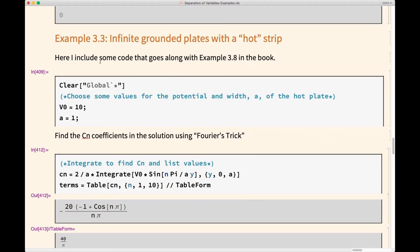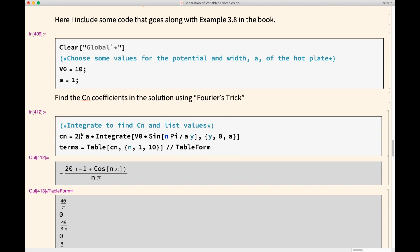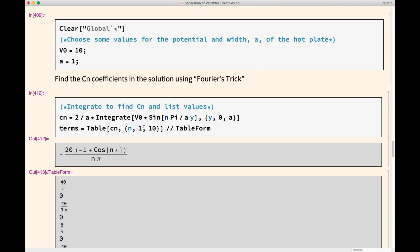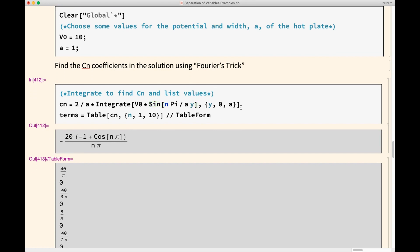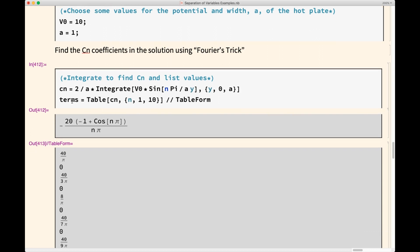I wrote up a little notebook to look at this problem in particular. This particular problem, I just wrote a little bit of code to go with it. I've defined the potential as 10, just picking something random. I defined A as 1, doesn't really matter. And here I'm integrating to find those constants, C sub N. And I'm just using Mathematica to do the integral, even though, as I showed, you could easily do this one by hand. But I'm taking 2 divided by A times the integral of our V naught times sine of N pi divided by A times Y. And I'm doing it in between the plates.